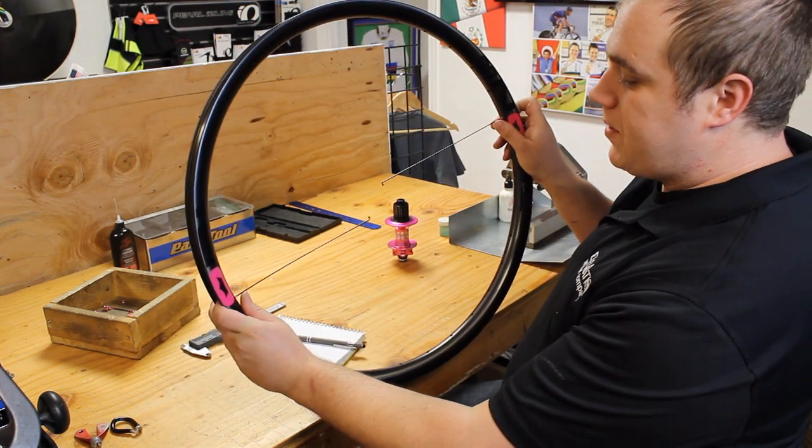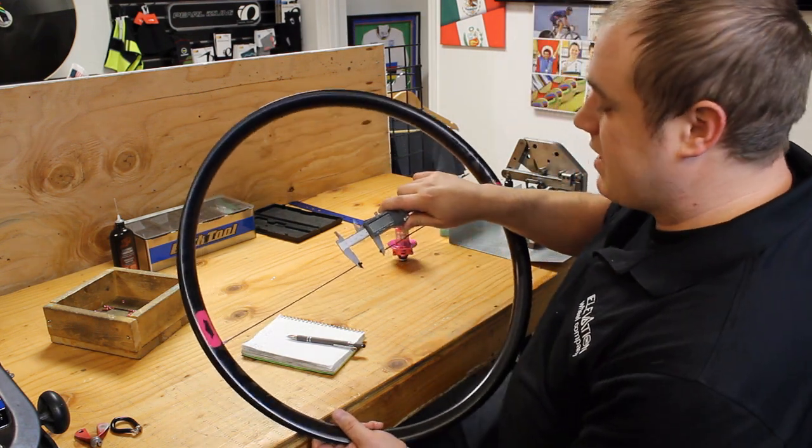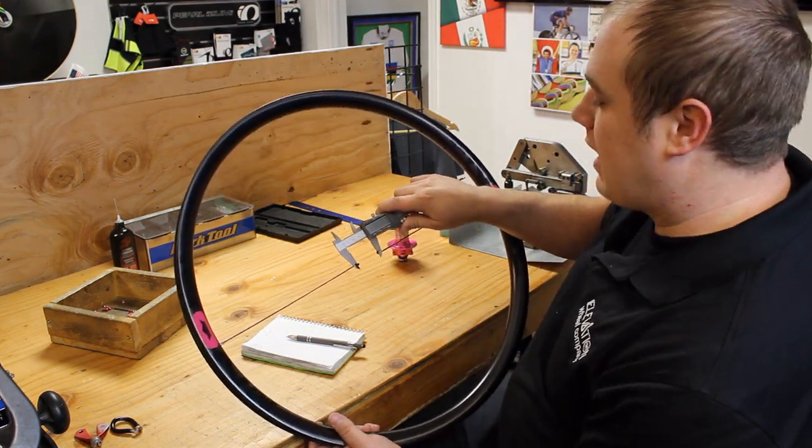We've got two spokes threaded in directly opposite of each other. Now we will take our calipers and measure the gap or the overlap in these spokes.